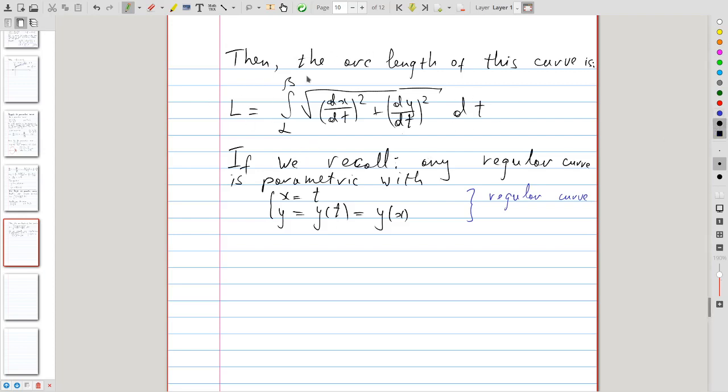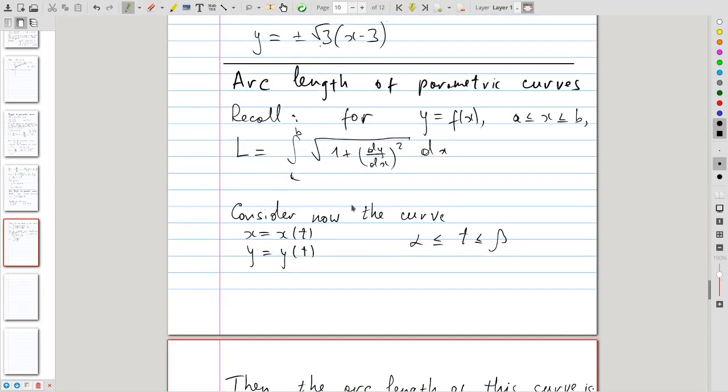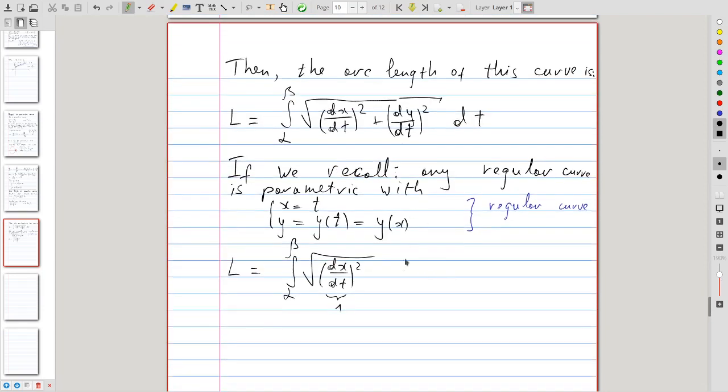if we use the formula for parametric curve, we get precisely what we had previously, because now, integral from alpha to beta, dx/dt here is 1. So, when we square it, we get precisely the 1 we had there previously. And then, dy/dt is the same, of course, as dy/dx, because x is, indeed, the same as t.